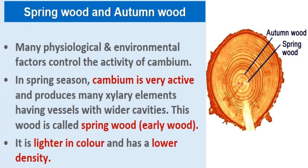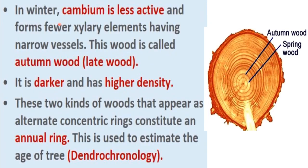In winter season, cambium is less active and forms few xylary elements having narrow vessels. Compared to spring season — where more xylary elements are formed with wider vessels — here fewer xylary elements are formed with narrow vessels. This wood, formed during winter, is called autumn wood or late wood. Autumn wood is darker in color and has a higher density than spring wood.